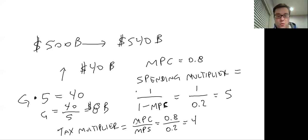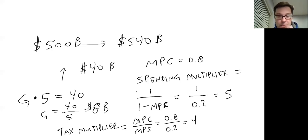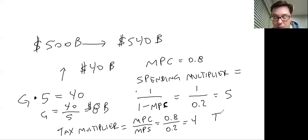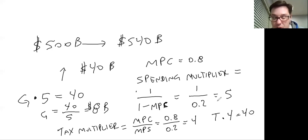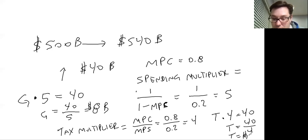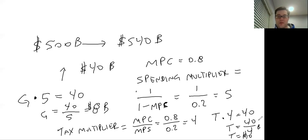We know it's a tax cut — we wouldn't raise taxes to stimulate aggregate demand, that would work the other way. So call it T times the tax multiplier of 4, which needs to equal the $40 billion we need. Taxes equal 40 over 4, which is $10 billion. So we get a tax cut of $10 billion.